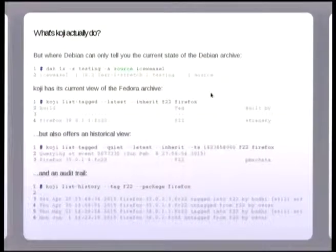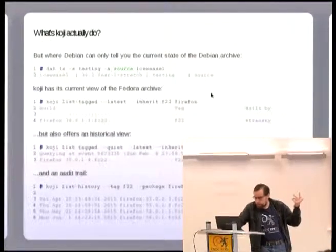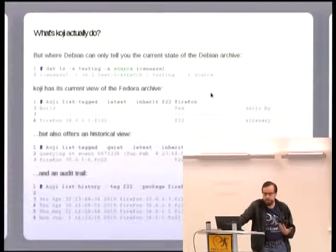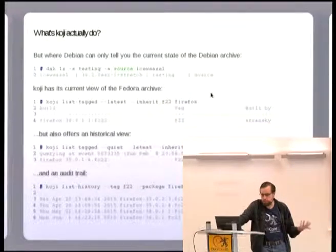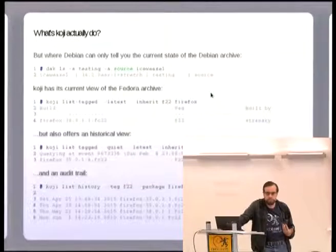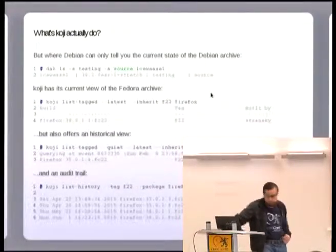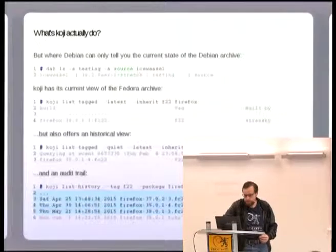So where Koji gets interesting and does things that Debian can't do is in history. With DAK ls or rmadison you can see what's currently in the archive, and you can do the same thing with Koji, but Koji also lets you see what things were like back in February the 8th. You can do that just with a simple command line from your laptop at home. And you can also get an audit trail - when did the packages get uploaded, when did they change, who did them. A simple command will just give you a history of that.